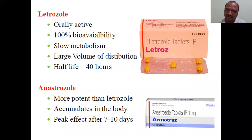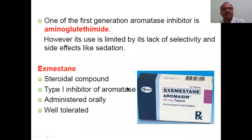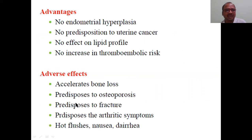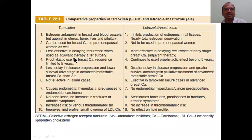Examples: letrozole and anastrozole are available as tablets and are orally active with 100% bioavailability and slow metabolism; half-life is 40 hours. Anastrozole is more potent than letrozole. Exemestane is also available. Aminoglutethimide was one of the first generation aromatase inhibitors. They inhibit estrogen production in all body tissues — fat tissue, uterine tissue, breast, wherever. They delay reduction of early breast cancer. Adverse effects include acceleration of bone loss. A comparison of SERMs vs. aromatase inhibitors is available as per the Tripathi pharmacology book.